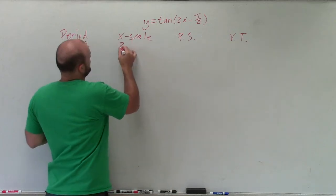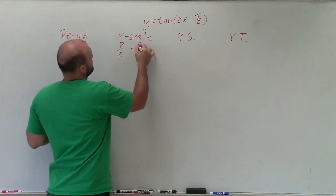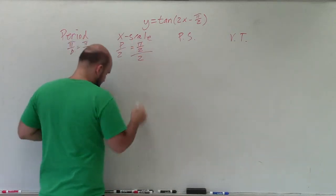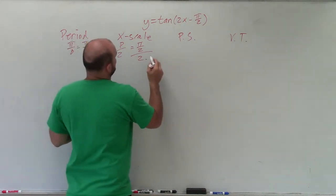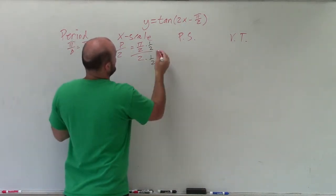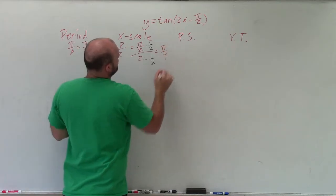Our x scale is just going to be our period divided by 2. So now we have pi halves divided by 2. So to do that, I'll multiply by the reciprocal. And my x scale now is pi over 4.